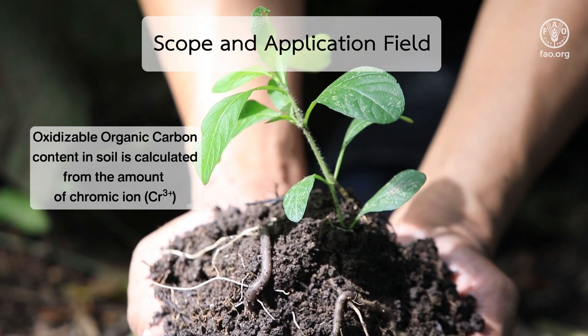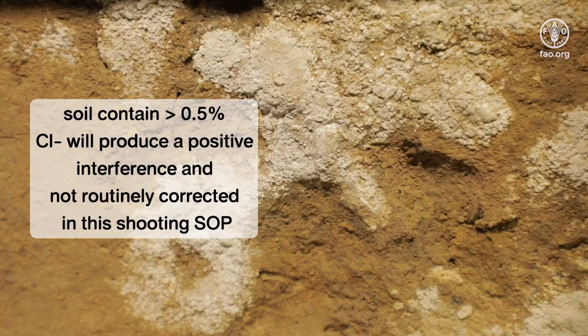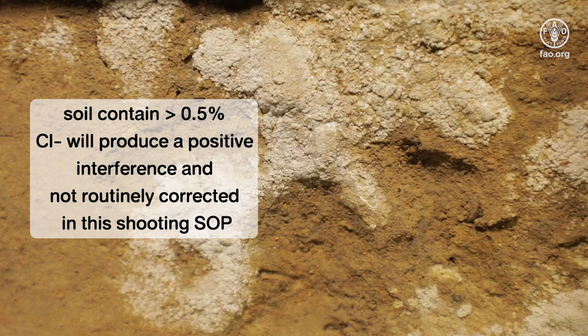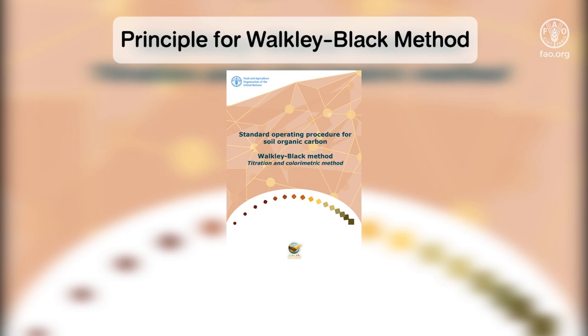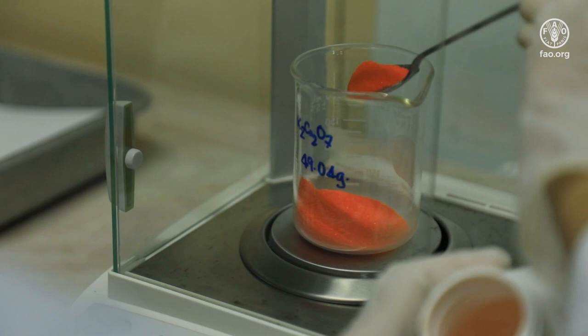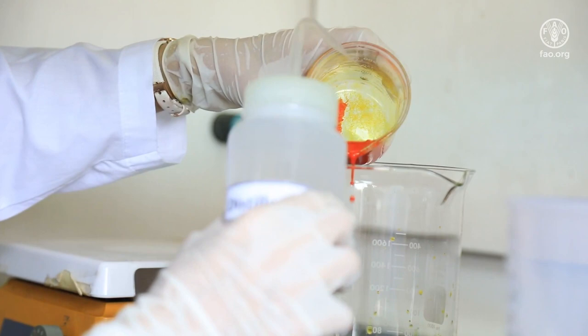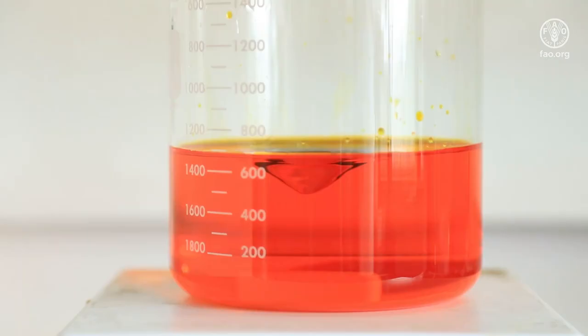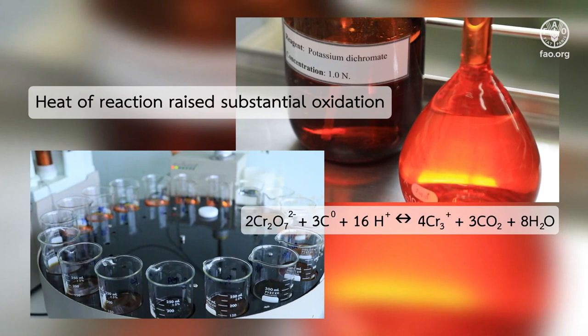The method described here does not routinely apply correction for chloride, which will produce a positive interference. This standard operating procedure is based on the Walkley and Black chromic acid oxidation method. Basically, oxidizable organic carbon in the soil is oxidized by 0.167 molar potassium dichromate solution in concentrated sulfuric acid. Temperature needed to induce substantial oxidation is raised by the heat of reaction.